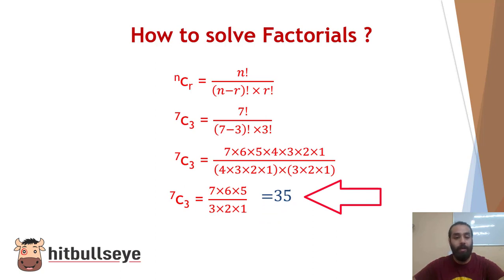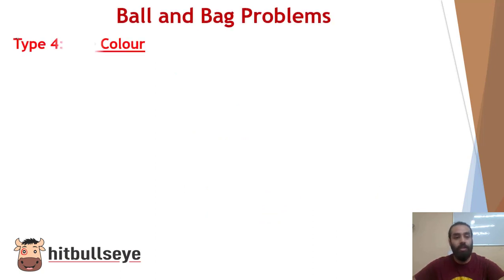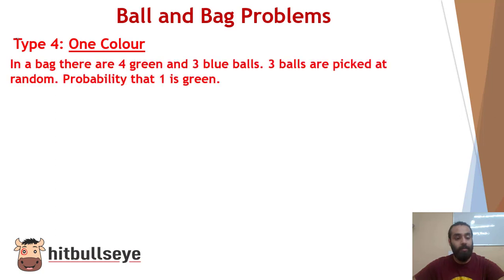Now let's proceed with our probability. So in the ball and bag problems, we have already seen 3 types of problems where we have 'and' as a connecting word and after that we have 'both' used. Now in type 4, we will see when one color ball is picked up.